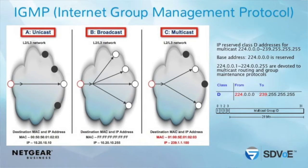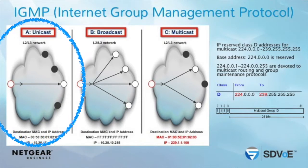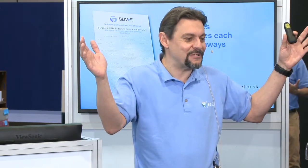Your video is one source, and that video is going to be sent to many possible displays. You don't want to do unicast or broadcast. Take an Ethernet network — the most common communication is unicast, one to one. Sending an email is a one-to-one communication. You don't want to do that with your videos because you would flood the entire network.